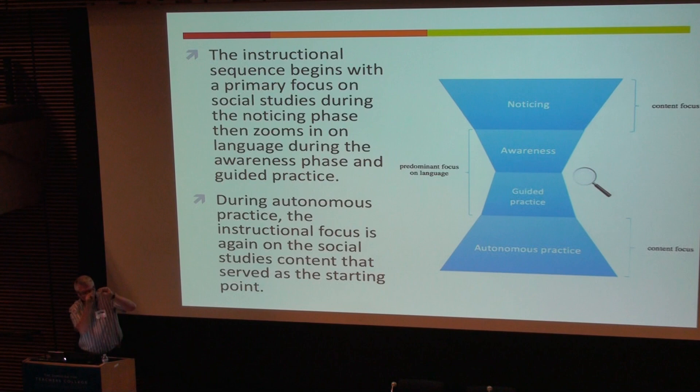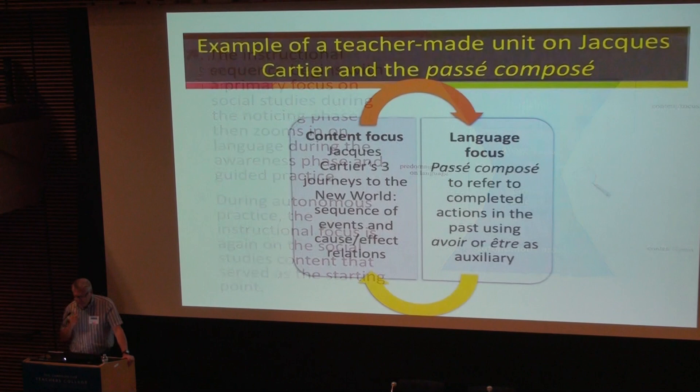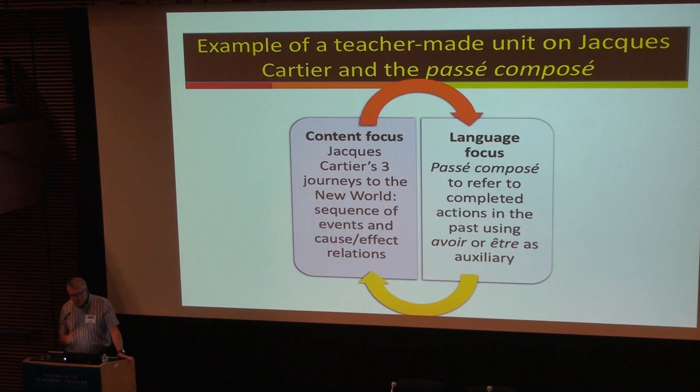The model pushes teachers to start with the content, create a context where students can notice language features in the awareness phase, practice them during guided practice, and then return to content in autonomous practice. An example created by teachers at the fourth-grade level focuses on Jacques Cartier and his three expeditions to the New World, looking at cause-and-effect relationships.